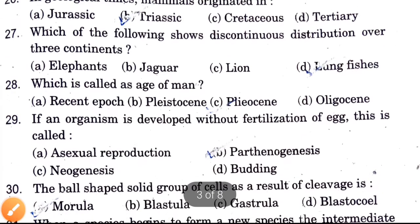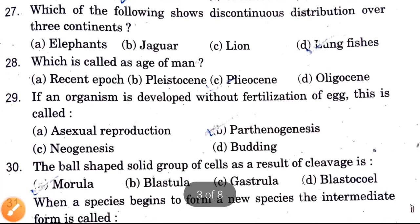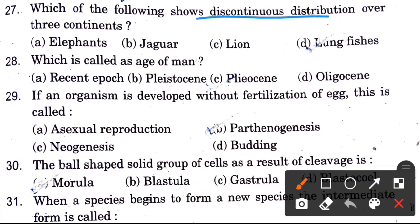Next question: Which of the following shows discontinuous distribution over three continents? Options are Elephants, Jaguar, lungfishes, and Echidna.